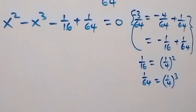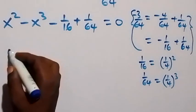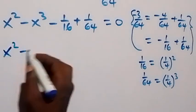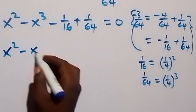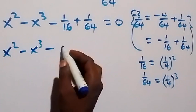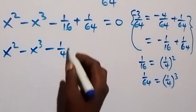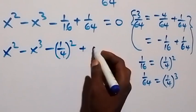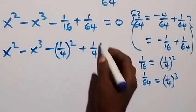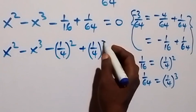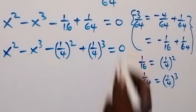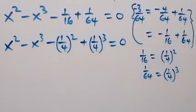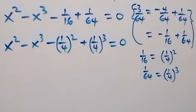So now what we have is: x squared minus x cubed, then minus 1 over 4 all squared, then plus 1 over 4 all raised to power 3, and plus 2 over 4 all raised to power 3, equals to zero.